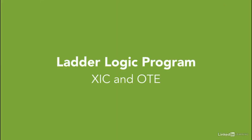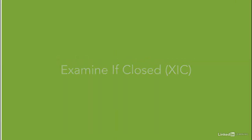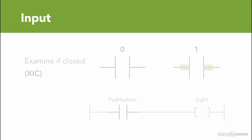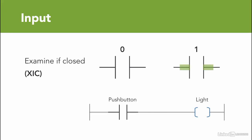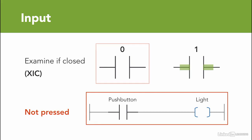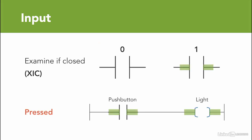Let's see how the Ladder Logic program behaves when using the Examine If Closed instruction. Using XIC instruction, the instruction is only activated when the memory location is 1. So when the push button is not pressed, the logic state is 0, the instruction is false, and the light will not turn on. When the push button is pressed, meaning the logic state is now true, equals to 1, then the instruction is highlighted and, according to the continuity, the light will turn on.